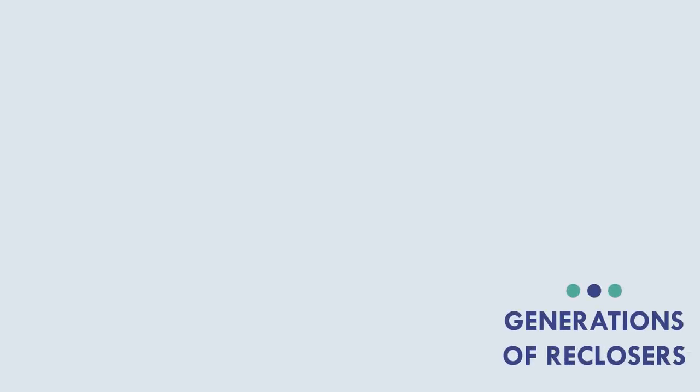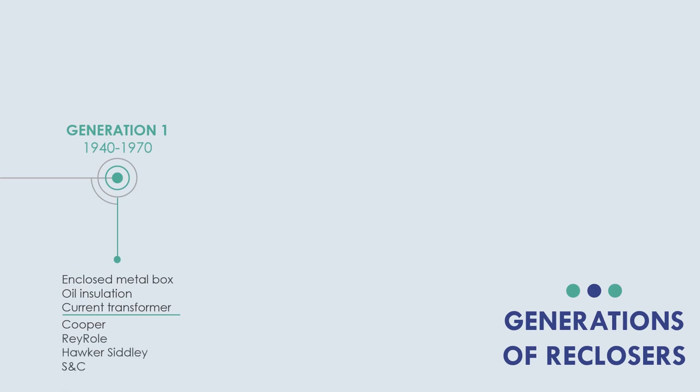Let's have a look at the history of recloser development divided by generations. Generation 1 lasted from 1940 to 1970s and is defined by the following characteristics: enclosed metal box construction, oil insulation, and current transformer. First generation was produced by Cooper, Reyrolle, Hawker Siddeley, and S&C.